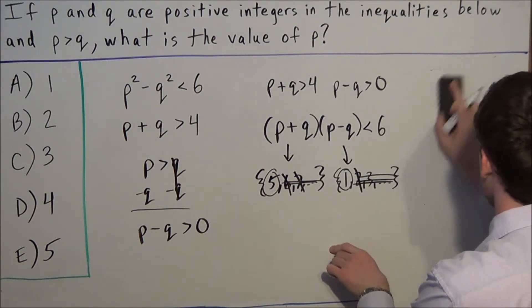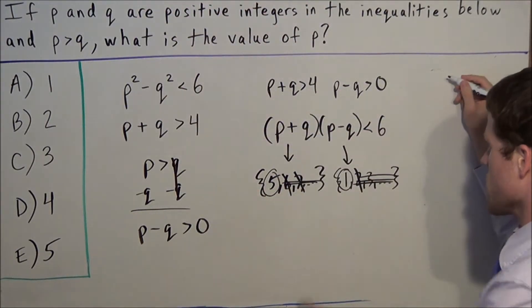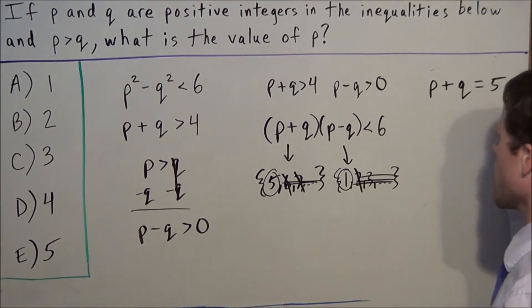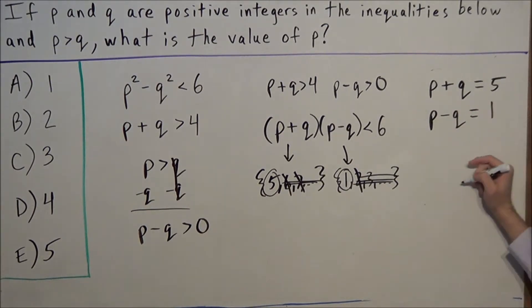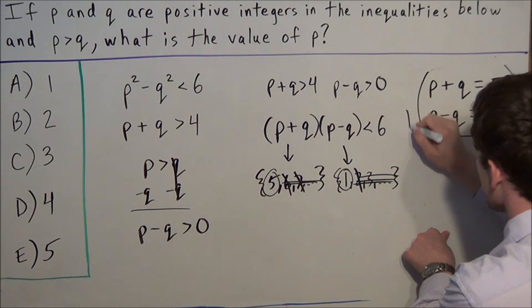Now we can set up a mini system of equations. This tells us p + q = 5 and p - q = 1. One thing we can do is add this system of equations together.